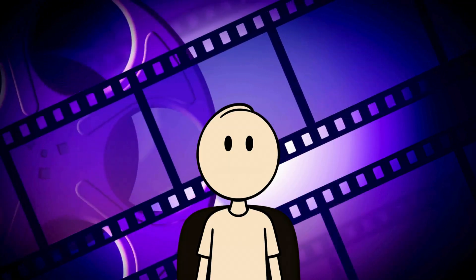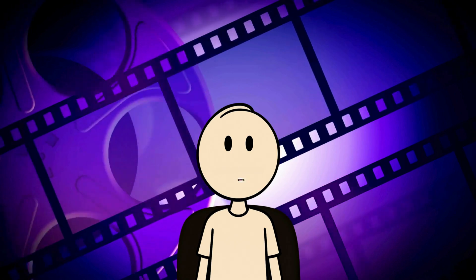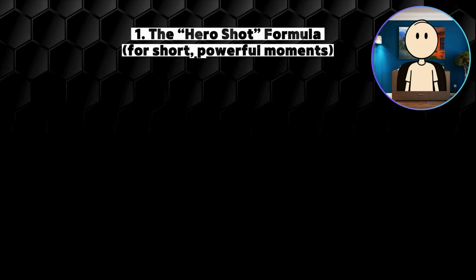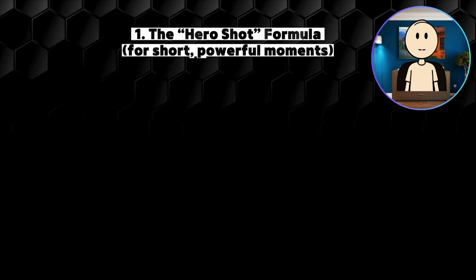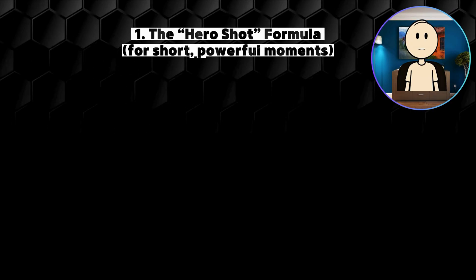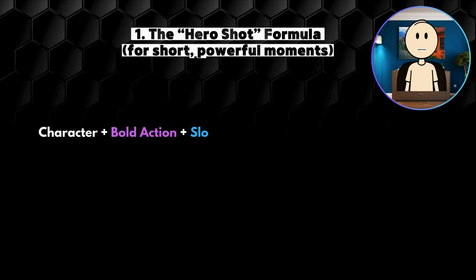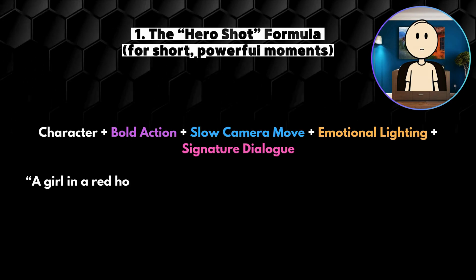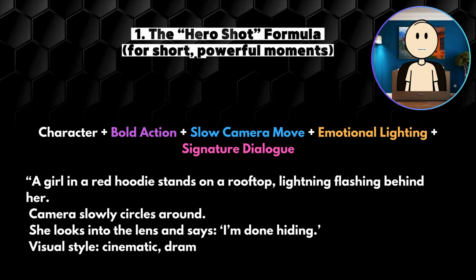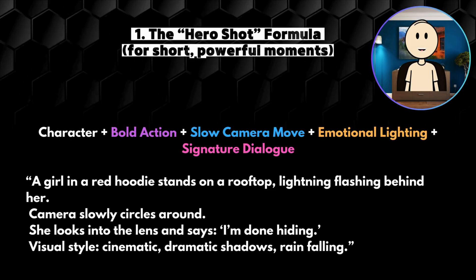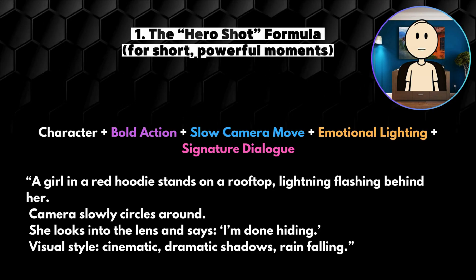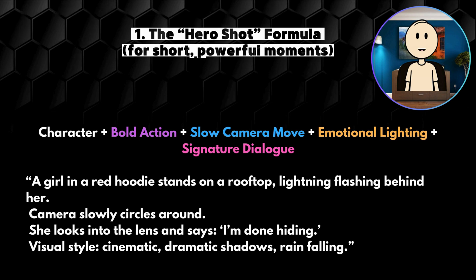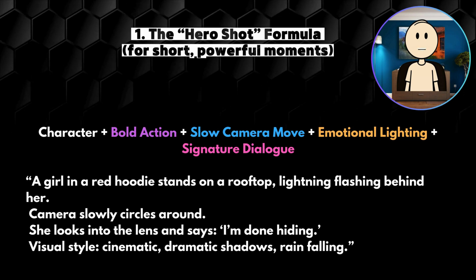Let's dive into three pro-level prompt frameworks to lift your storytelling to a whole new level. The hero shot formula — for short, powerful moments. Perfect for TikToks, trailers, intros, or dramatic reveals. Prompt formula: character plus bold action plus slow camera move plus emotional lighting plus signature dialogue. Example: 'A girl in a red hoodie stands on a rooftop, lightning flashing behind her. Camera slowly circles around. She looks into the lens and says, I'm done hiding. Visual style: cinematic, dramatic shadows, rain falling.' Why it works: you give Veo just enough to build a visually iconic moment, instantly.